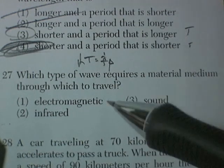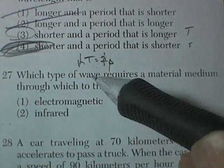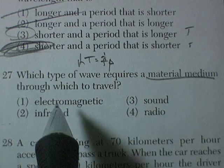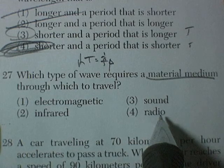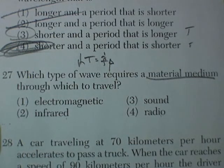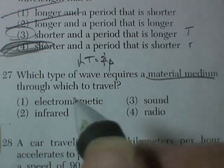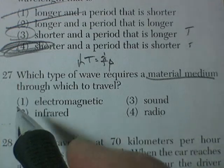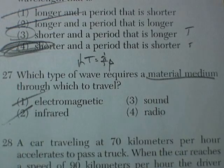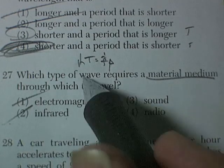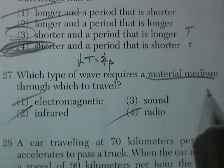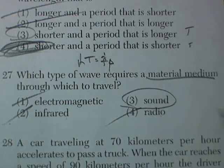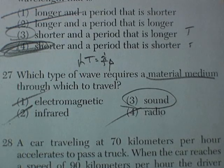27 is just a memory, but you can think about it. Which type of wave requires a material, a medium, through which to travel? Electromagnetic, infrared, sound, and radio. Well, we can get electromagnetic energy from the sun, which is infrared, is a form of electromagnetic energy. So it turns out radio is a form of electromagnetic energy. So one can't be true without the other. And so the correct answer is sound. You need air in order for sound to travel.